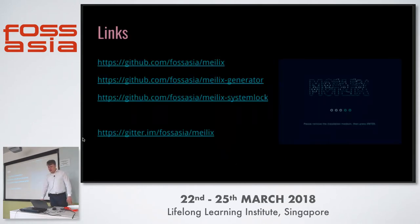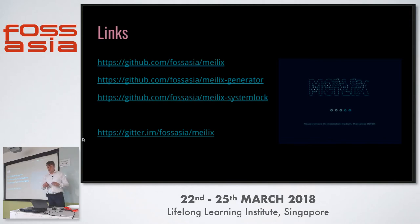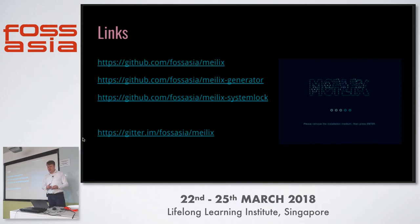Here are some links — there are three repositories. One is for Meilix itself, for building it. These are simple shell scripts that pull together the packages, open up a chroot where some other software gets installed and some configuration happens. Then we have the generator branch in Meilix that's important for generating the image for the Meilix generator. Then we have the web app, the Meilix generator as a separate repository. And the third one worked on the year before last is the Meilix system lock.